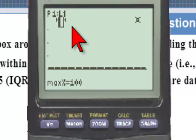So that is how the TI-83 can be used to find outliers in any distribution of numbers.